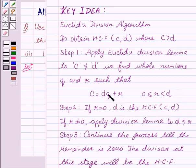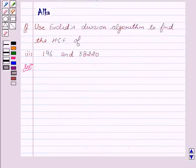we will apply the division lemma to D and R, and this process keeps on going till R equals 0. At that stage where R is equal to 0, D is the required HCF. So now let's start with the solution.